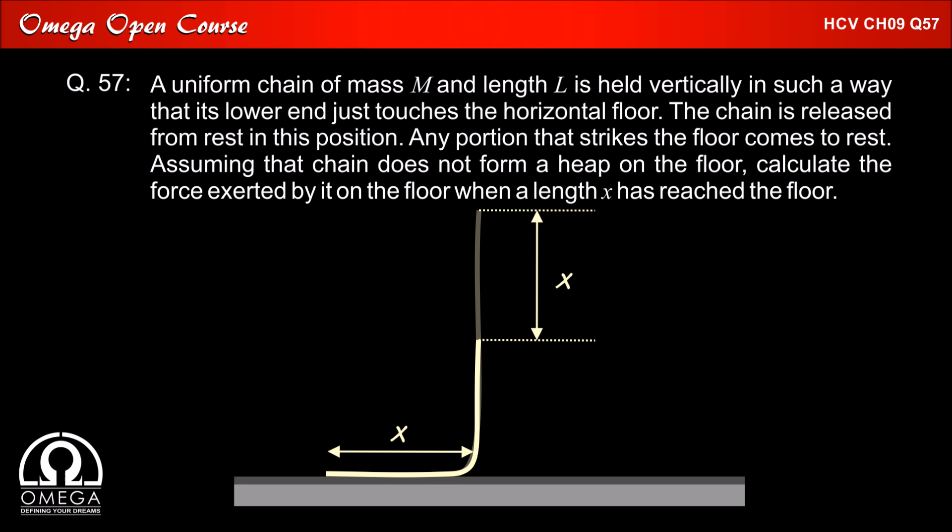A uniform chain of mass M and length L is held vertically in such a way that its lower end just touches the horizontal floor. The chain is released from rest in this position. Any portion that strikes the floor comes to rest. Assuming that the chain does not form a heap on the floor, calculate the force exerted by it on the floor when a length X has reached the floor.